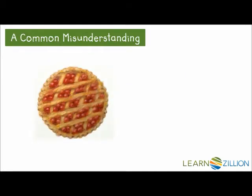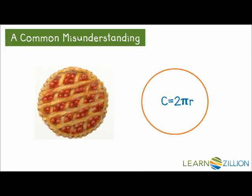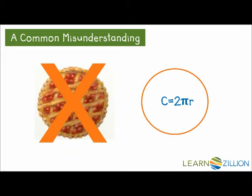Some students confuse a real pie with the symbol pi. Yes, believe it or not, they start thinking of the circumference of a circle as pi r instead of 2 pi r, because a pie, the kind you eat (P-I-E), is also circular. So be sure that you remember there's always a 2 in front of pi when you're talking about the circumference of a circle.